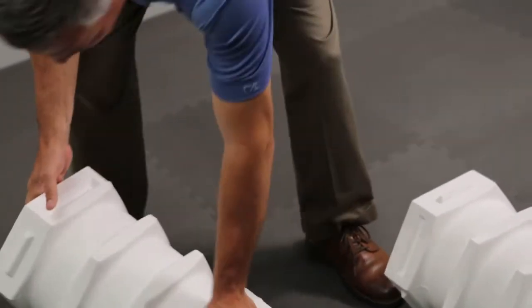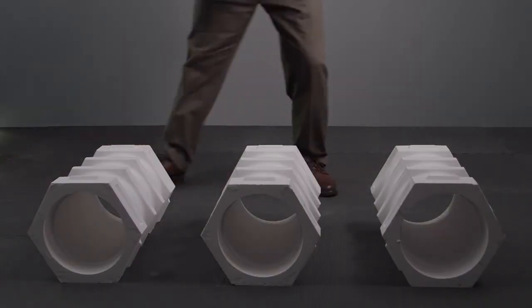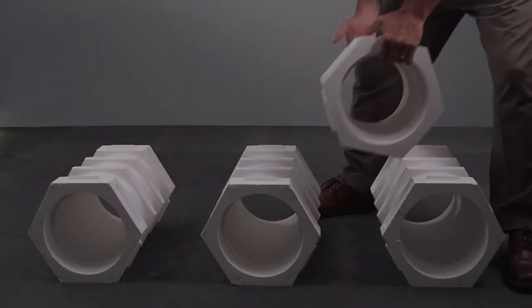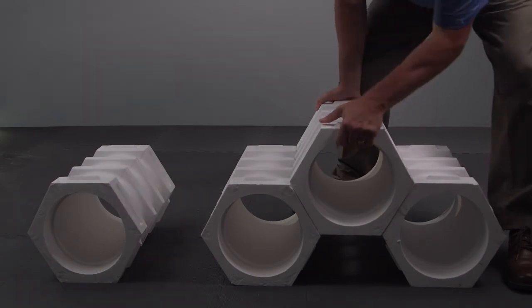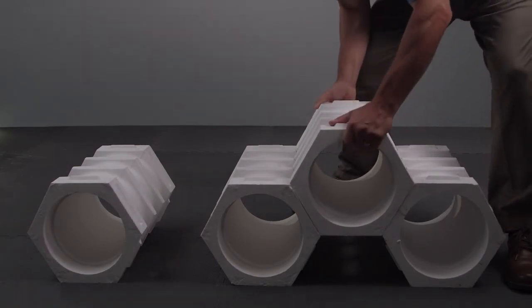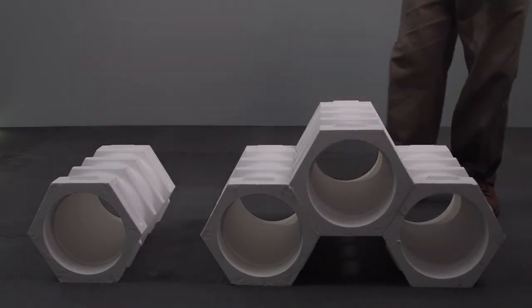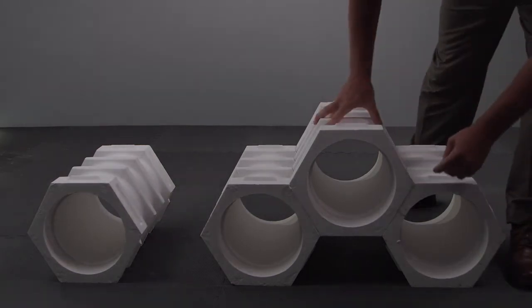So when you pick up a block and put it into place, you want to go male, female, male, female, and they will seat properly as a result of those tabs and slots.